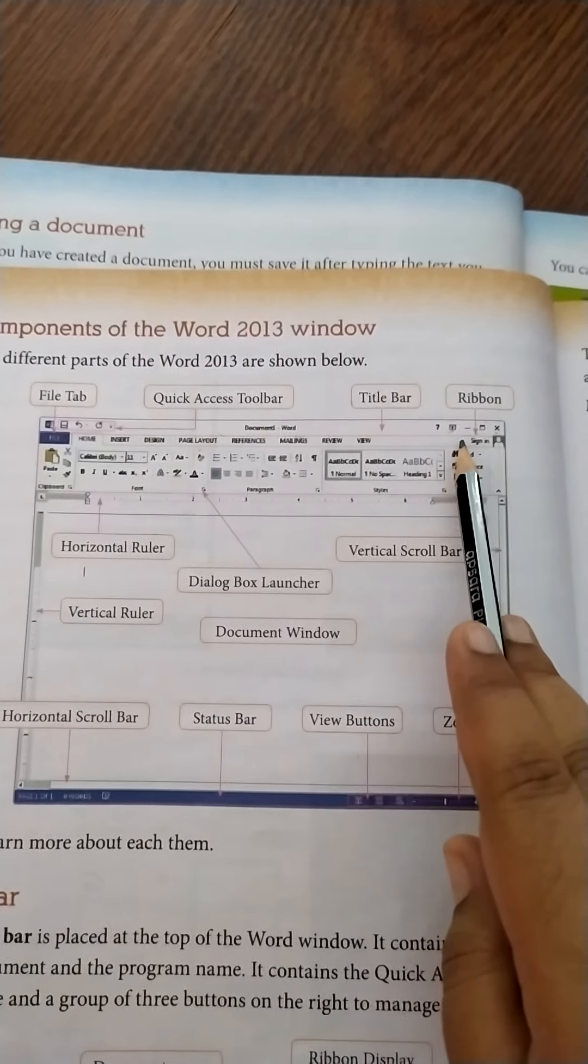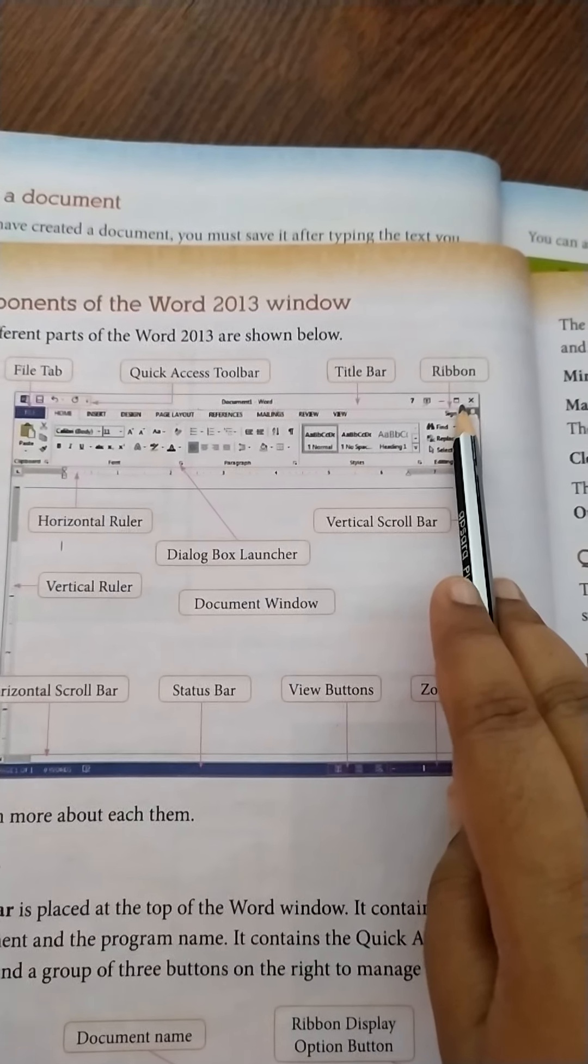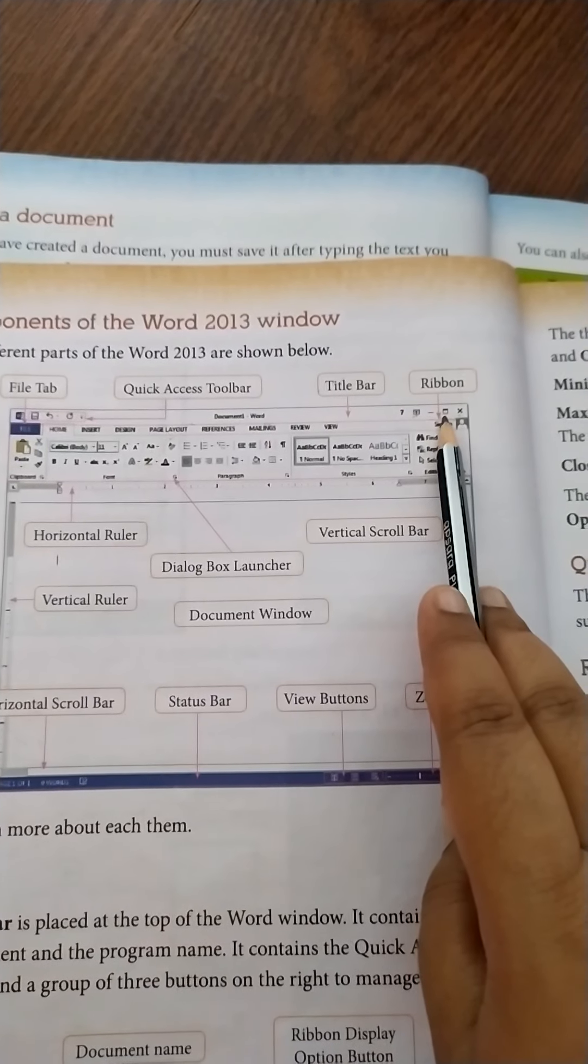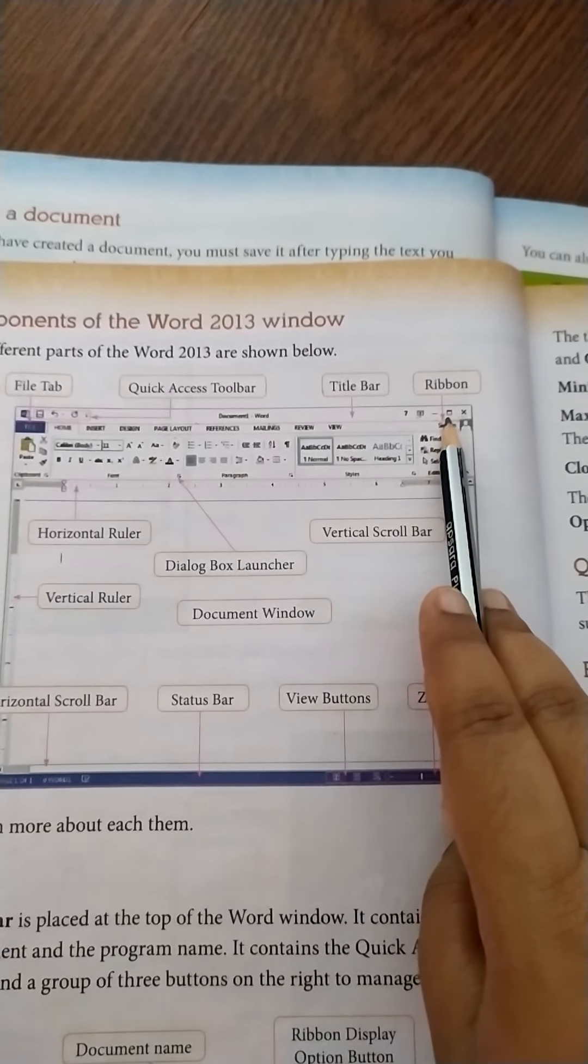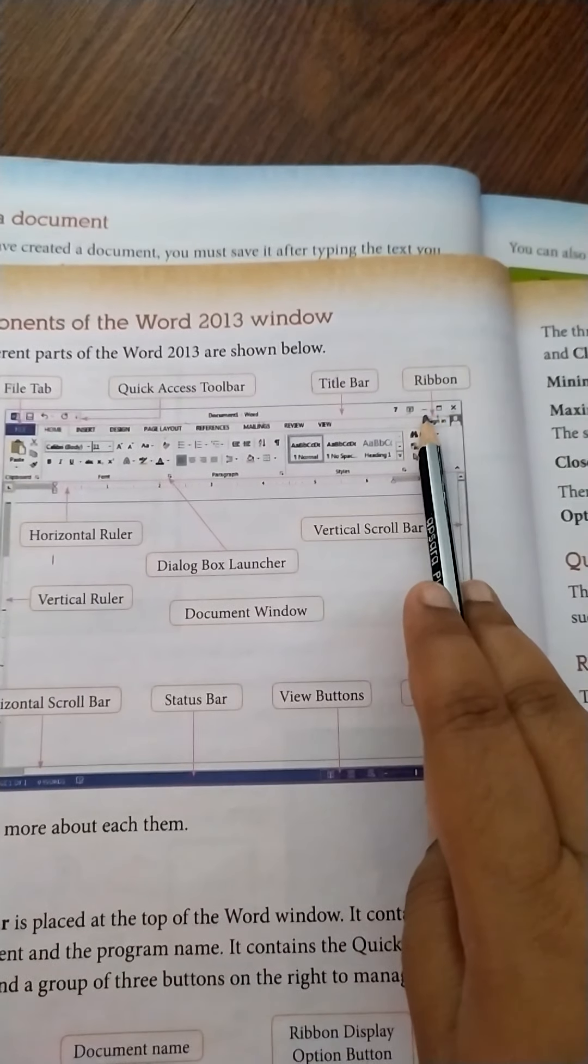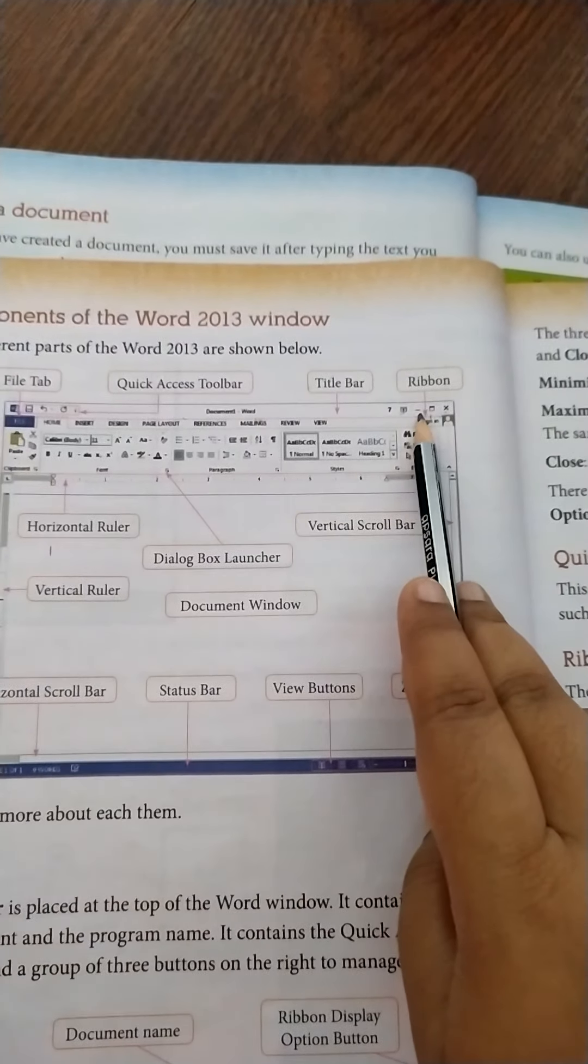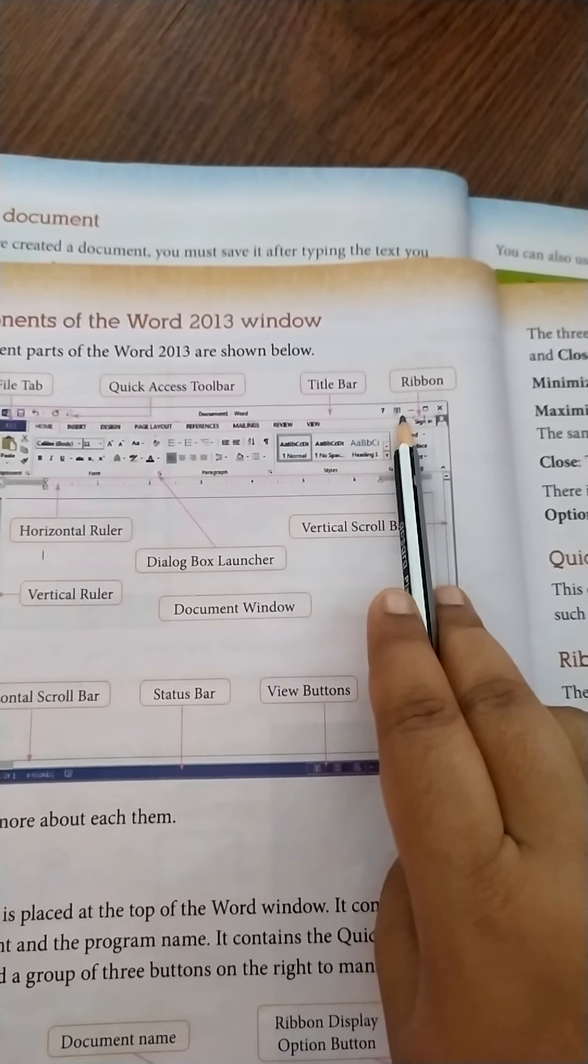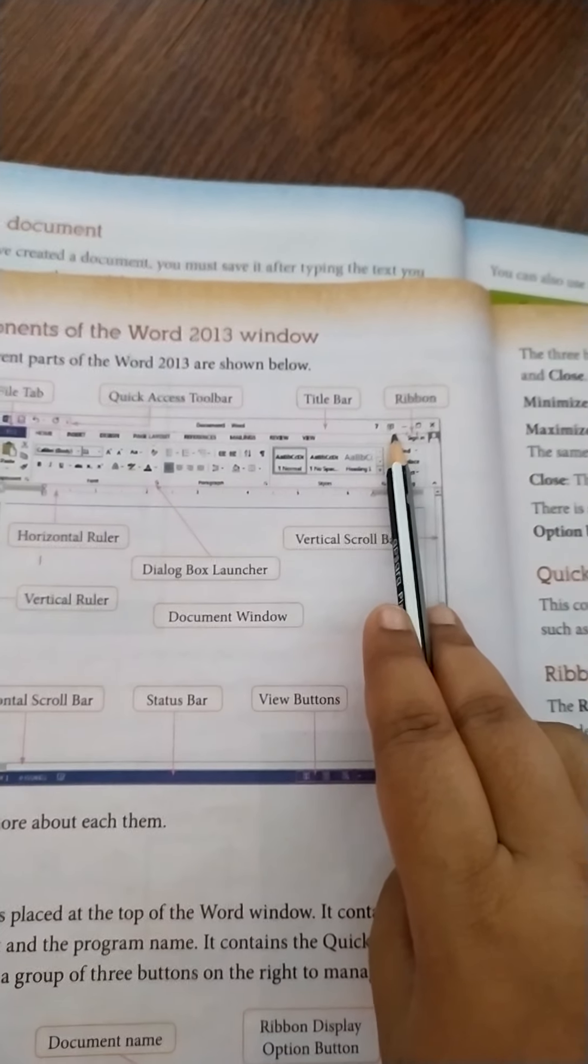Now what are the different uses of these buttons. The close button is used to close the window. The maximize button is used to reduce the size of the window. The same button is pressed again to bring the window back to the original size. The minimize button is used to reduce the window to a small icon on the task bar.